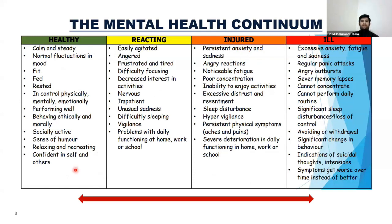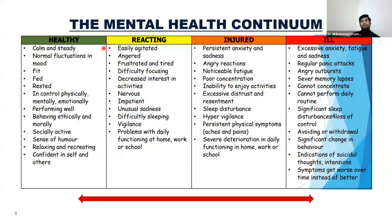The mental health continuum shows the spectrum from healthy to mentally ill. In a healthy state, a person is calm and steady, has normal mood fluctuations, is physically and mentally fit, performs well, behaves ethically and morally, is socially active, has a sense of humor, relaxes and recreates, and is confident in themselves and others. The next stage is 'reacting' — an early stage of mental health issues — followed by 'injured' and then severely unwell.